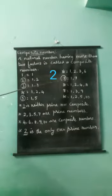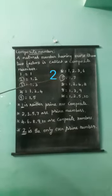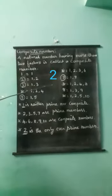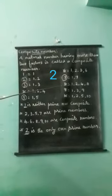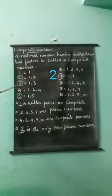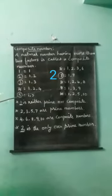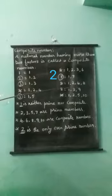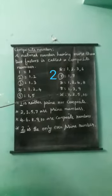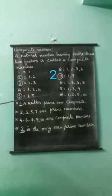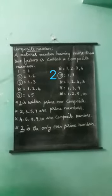7 is equal to 1, 7. 8 is equal to 1, 2, 4 and 8. 9 equals 1, 3 and 9. 10 equals 1, 2, 5 and 10.